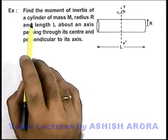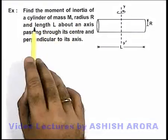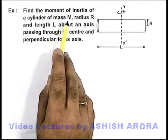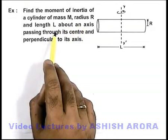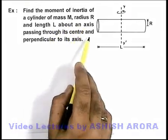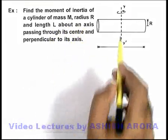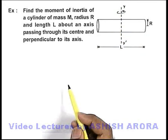In this example we are required to find the moment of inertia of a cylinder of mass m, radius r, and length l, about an axis passing through its center and perpendicular to its axis.